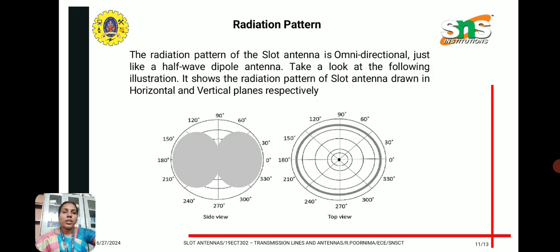The radiation pattern of a slot antenna is omni-directional, similar to a half-wave dipole antenna. The picture shows the radiation pattern in the horizontal and vertical planes respectively.